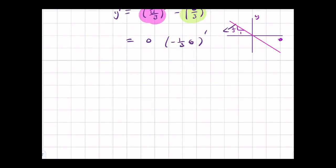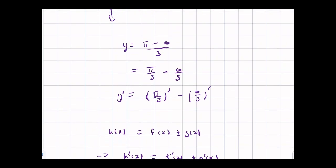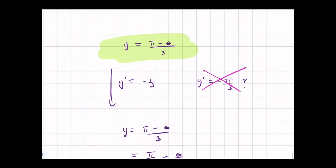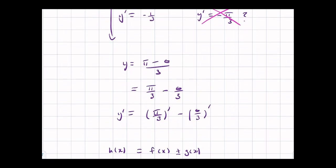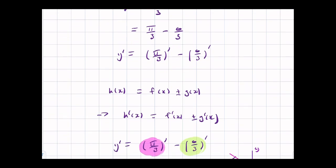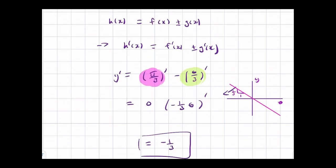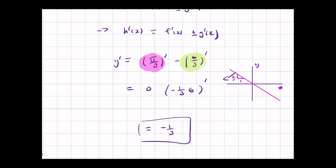So the derivative of this thing is negative 1 over 3. And so that, even though it might look like the derivative should be pi over 3, actually, if we break it up like this into the sum or difference of these two functions, the derivative is actually going to be negative 1 over 3. So hopefully this cleared that up.